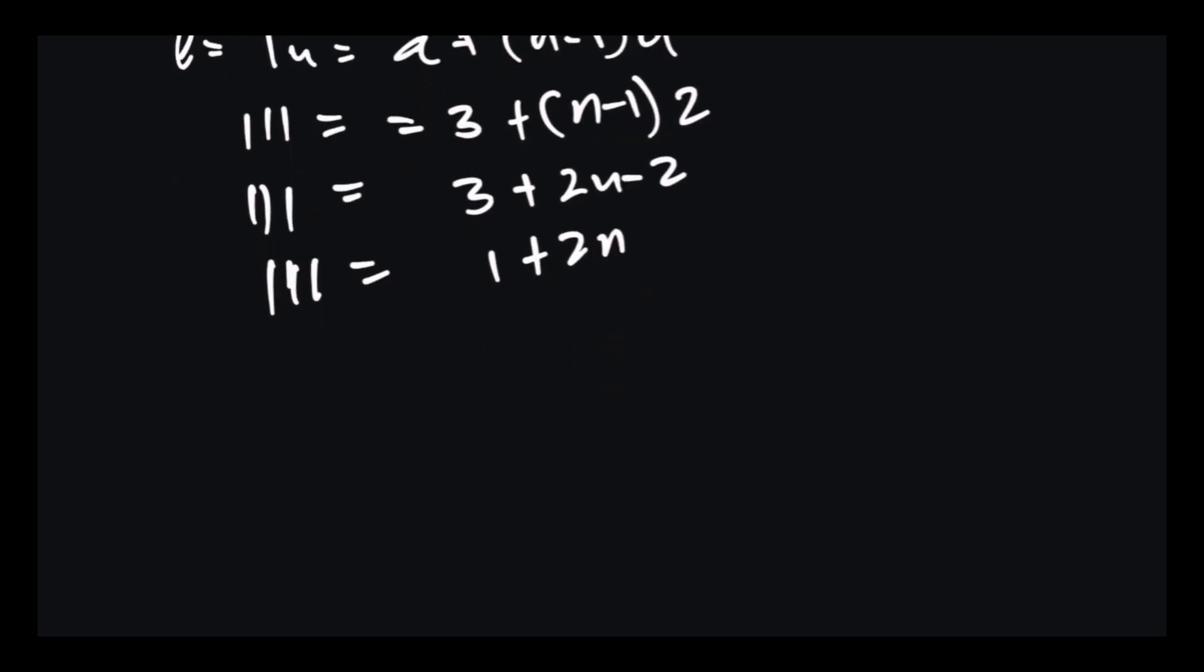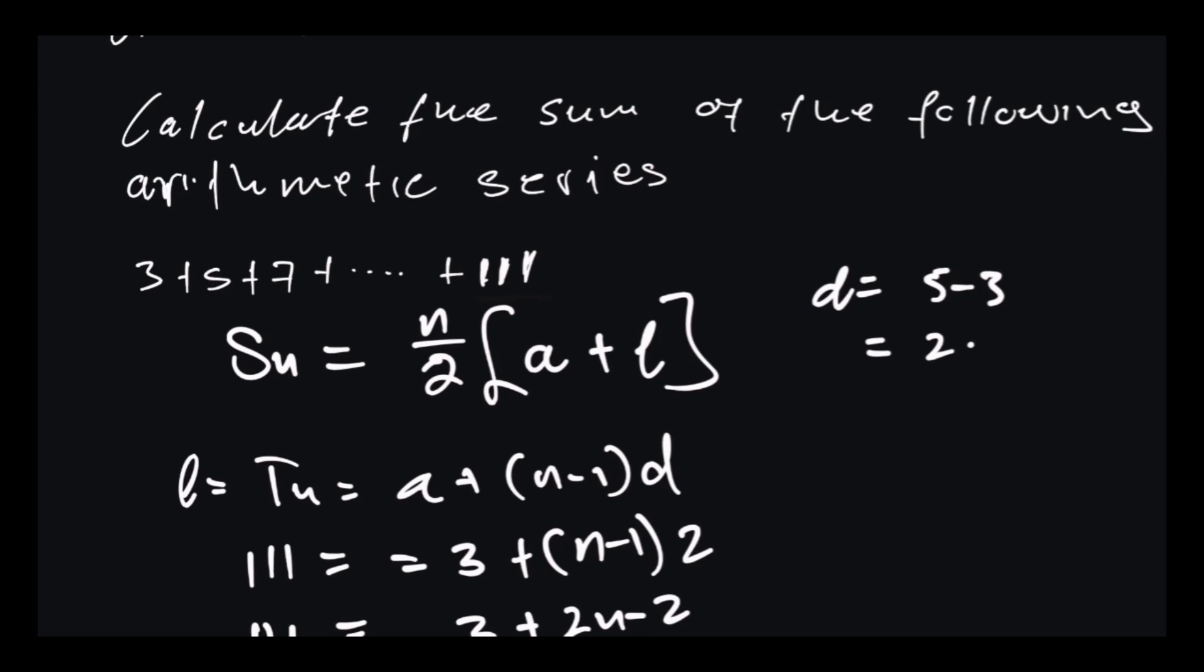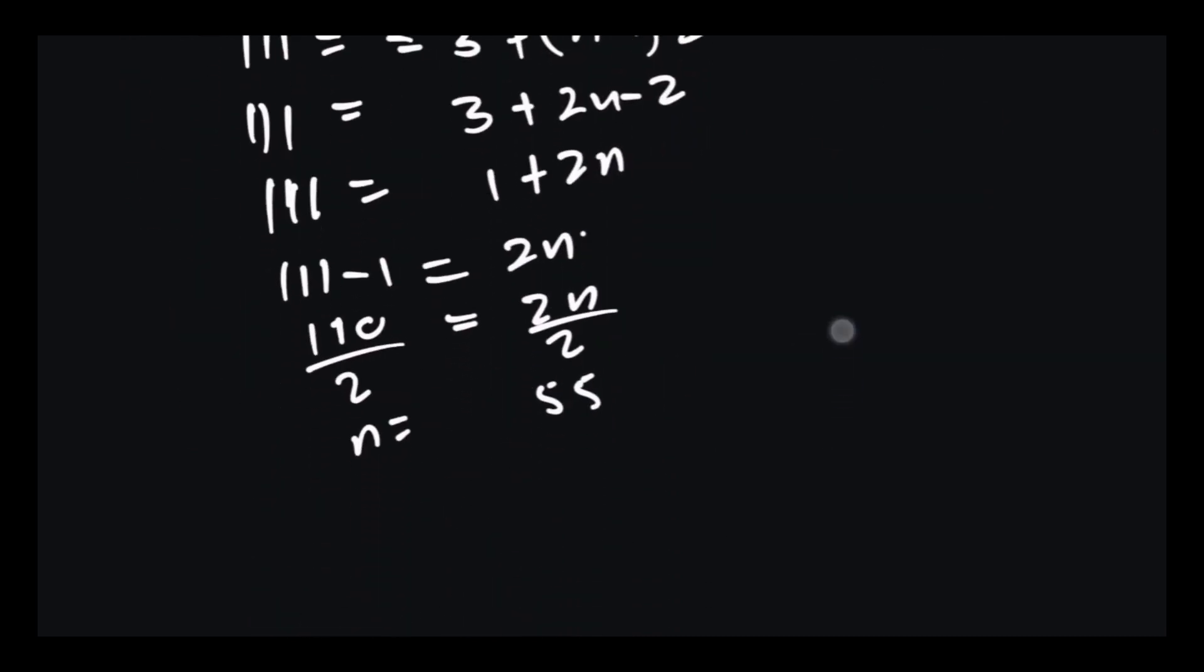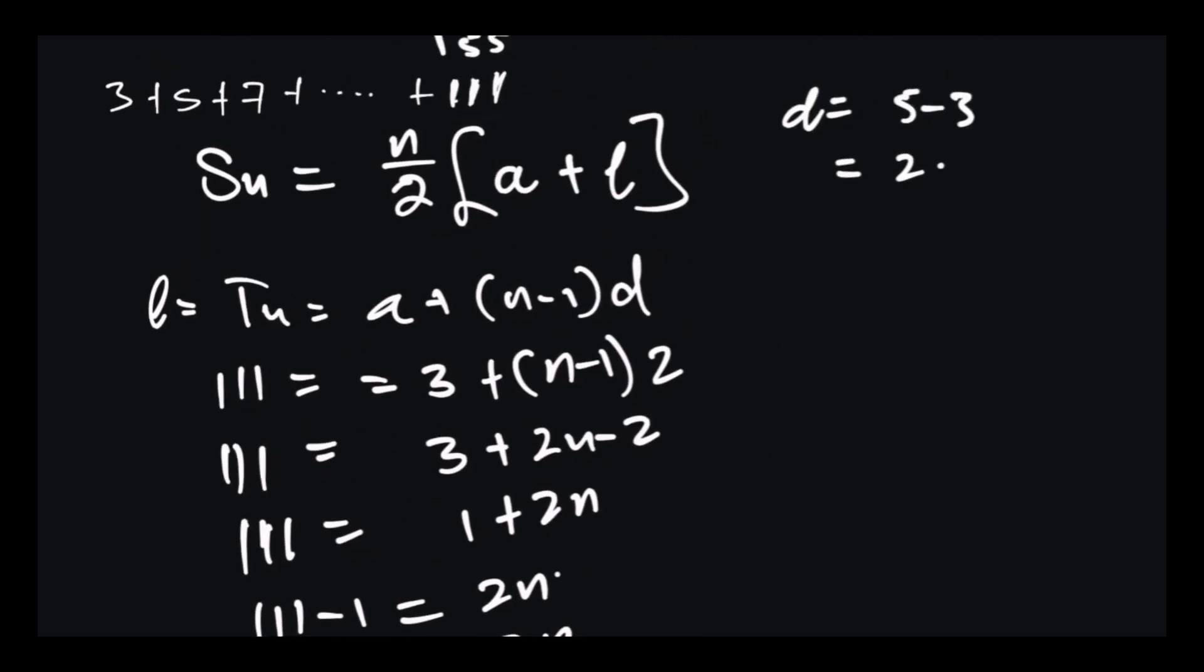We transpose 1 to the other side and we get 111 minus 1 and we get that equals 2n. And we get here we get 110 equals 2n, and we divide by 2 both sides and we get n equals 55. So this tells us that the terms in this sequence, the 55th term, so that's T55. So now what we have to do is to go back to this equation and plug in everything that we have and we find our Sn.